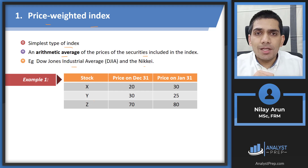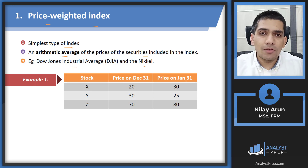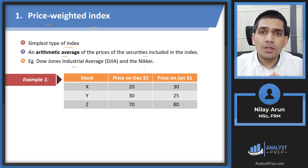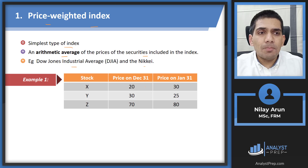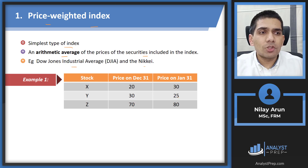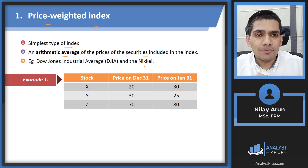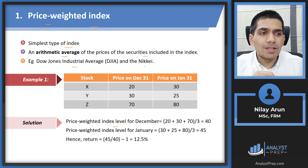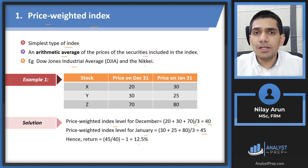Here's an example with stocks X, Y, and Z. Prices on December 31 are the opening prices and prices on January 31 are the closing prices. To calculate the price weighted index return, we simply average the three prices: 20 plus 30 plus 70 divided by 3 for December, and 30 plus 25 plus 80 divided by 3 for January. The December index level is 40, the January level is 45, and applying P1 minus P0 divided by P0 gives us a return of 12.5%.